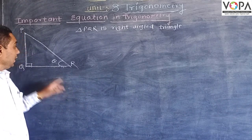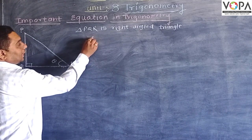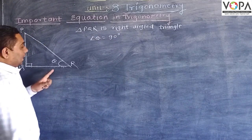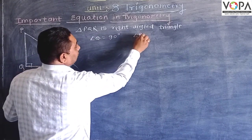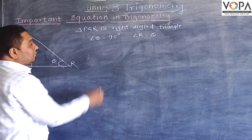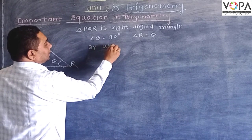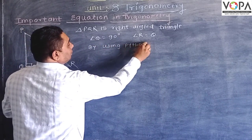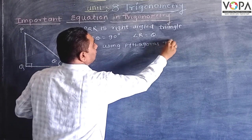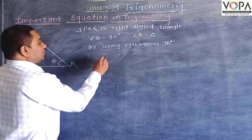In triangle PQR, angle Q is equal to 90 degrees and angle R is equal to theta. Now, by using Pythagoras theorem, we can write that the square of hypotenuse, that is PR squared, is equal to PQ squared